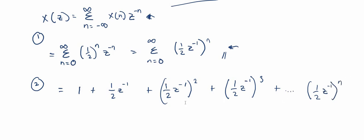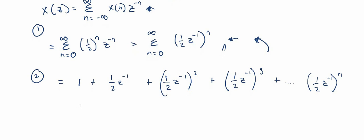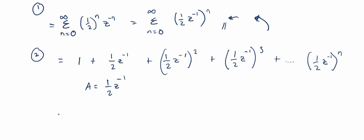This is an essential step. What we're going to do next is substitute (1/2)z raised to negative one with the variable 'a', so that the expression will be much simpler to work with.